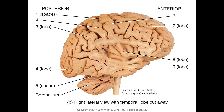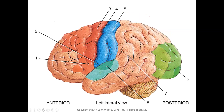Identifying the parts of the brain on a model where the temporal lobe has been partially dissected off to expose the insula: number one is the central sulcus, number six is the pre-central gyrus, number two is the post-central gyrus, number three is the parietal lobe, number four is the occipital lobe, number five is the transverse fissure, number nine is the temporal lobe, number eight is the insula, and number seven is the frontal lobe.